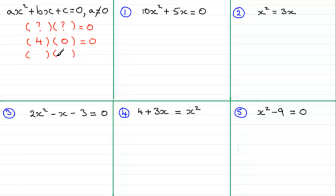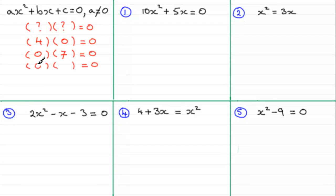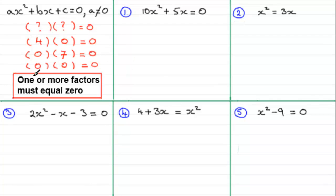It has to be zero. If I had a situation where the second factor was any number — say seven — and we're multiplying two factors together equaling zero, then the first factor must be zero. Zero times anything, or anything times zero, will always give zero. It doesn't matter how many factors you have — if I have three factors, any one of those must be zero. Both factors being zero also works, since zero times zero equals zero. So one or more factors must equal zero, and it's this principle that we use to solve quadratic equations.